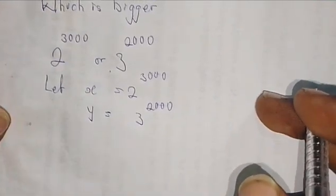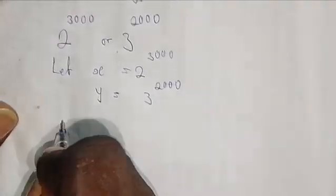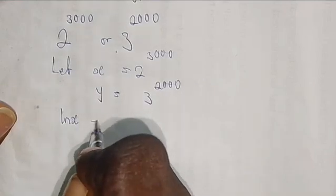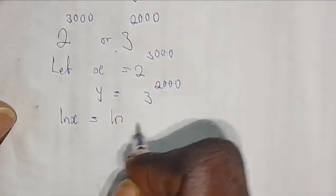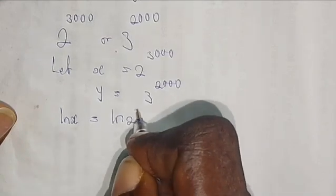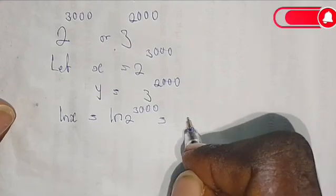From this, taking the log of both sides, we have the natural log of x equals the natural log of 2 raised to the power of 3000, which we can rewrite using the logarithm power property.